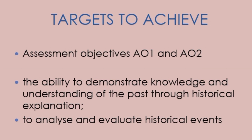What is the examiner looking for in this answer? He wants to see that assessment objectives AO1 and AO2 are achieved. These objectives are the ability to demonstrate knowledge and understanding of the past through explanation, and to analyze and evaluate historical events. Students will achieve these targets if they reach level 5, i.e. explanation of both sides of the issue with evaluation or judgment.